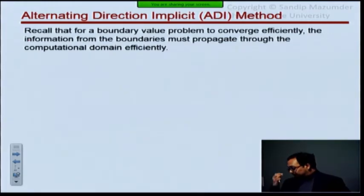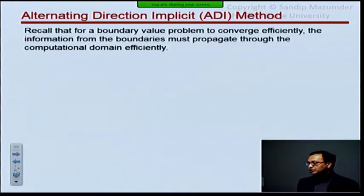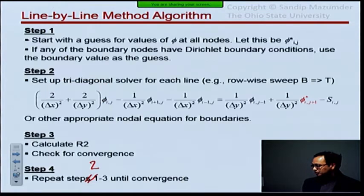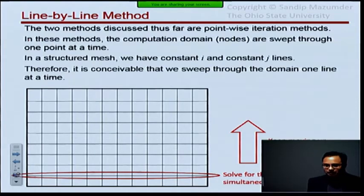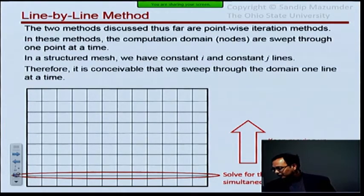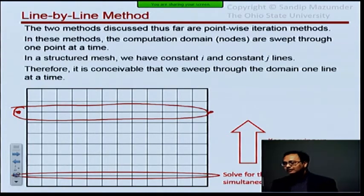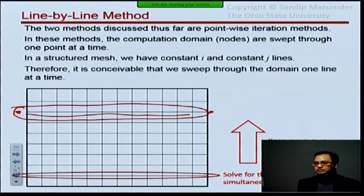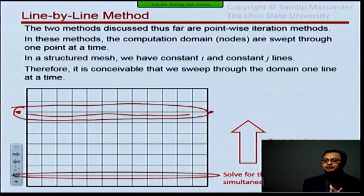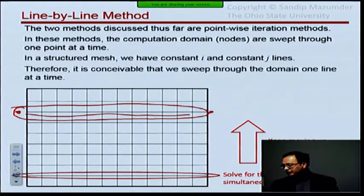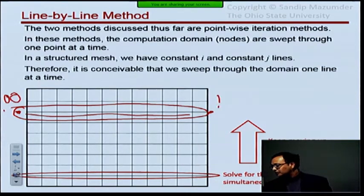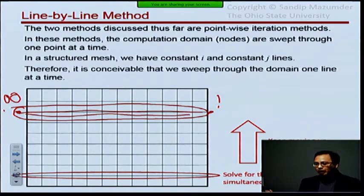For boundary value problems to converge efficiently, the information from the boundary must propagate into the computational domain. When you do a line-by-line approach and solve for an entire row simultaneously, whatever boundary condition you have on the left side and right side immediately affects all those nodes right after the tridiagonal solution. Everything is affected because all those values are updated in one shot. If you have boundary conditions of 0 on one side and 1 on the other, all the nodes will get values between 0 and 1, meaning both boundaries' effects are immediately felt.